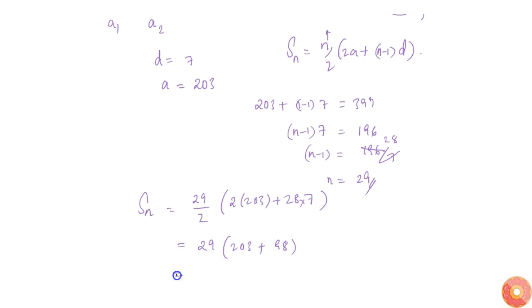This becomes 29 by 2 into 301, which equals 29 into 301, which is 8729. Therefore, the sum of all the numbers is 8729.